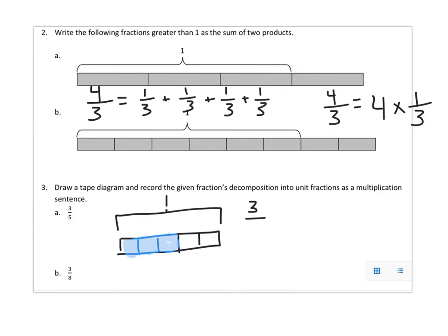And then write it as a addition. One-fifth plus one-fifth. And a multiplication. Three-fifths equals one-two. Three times one-fifth.